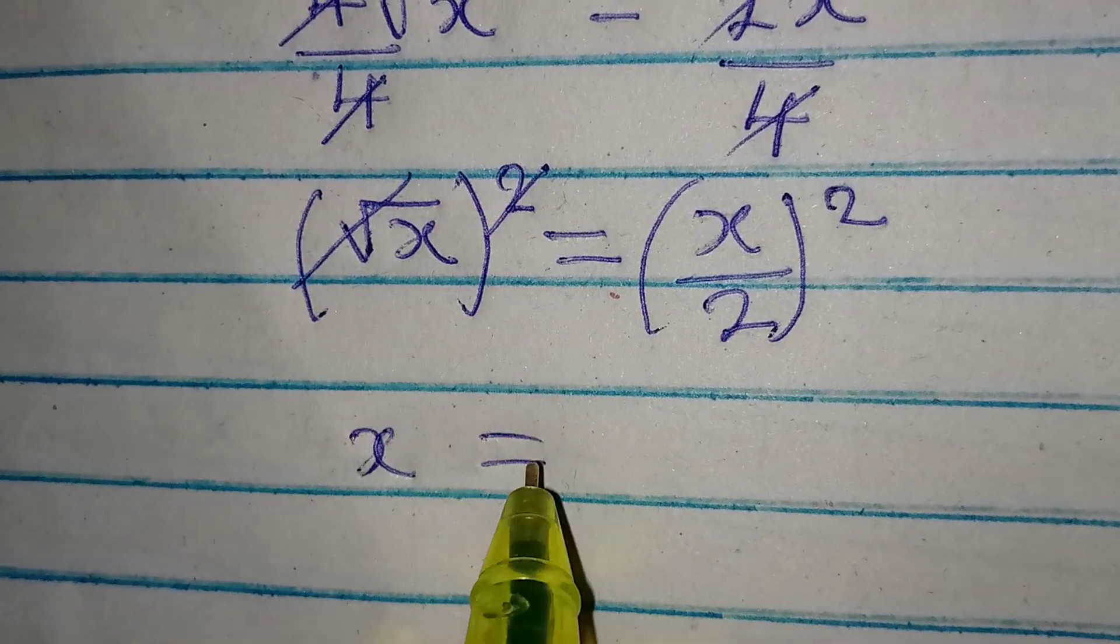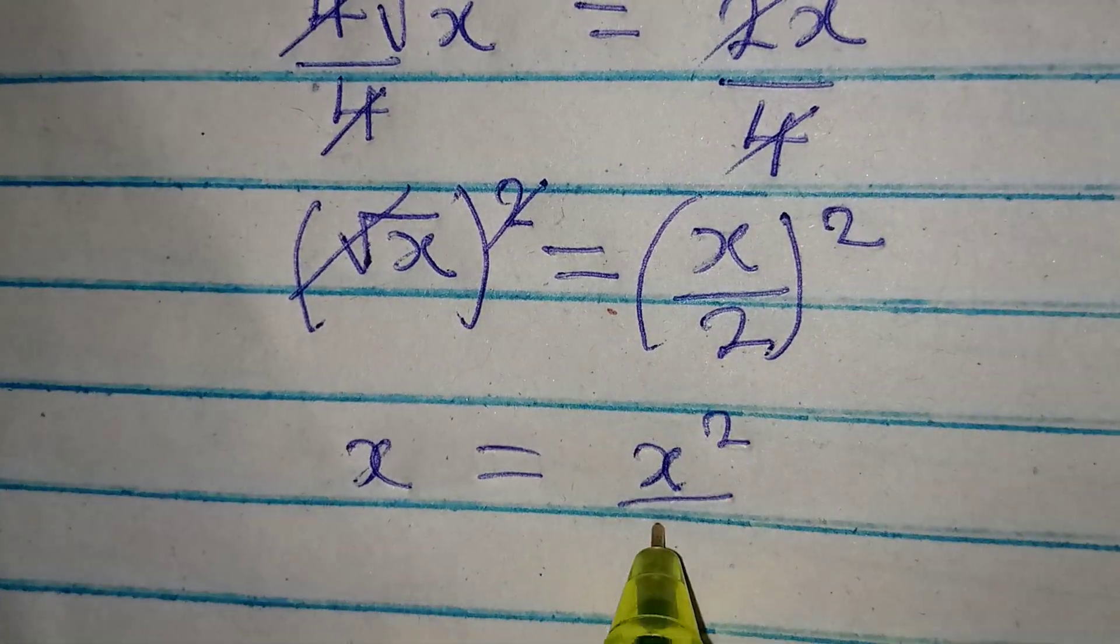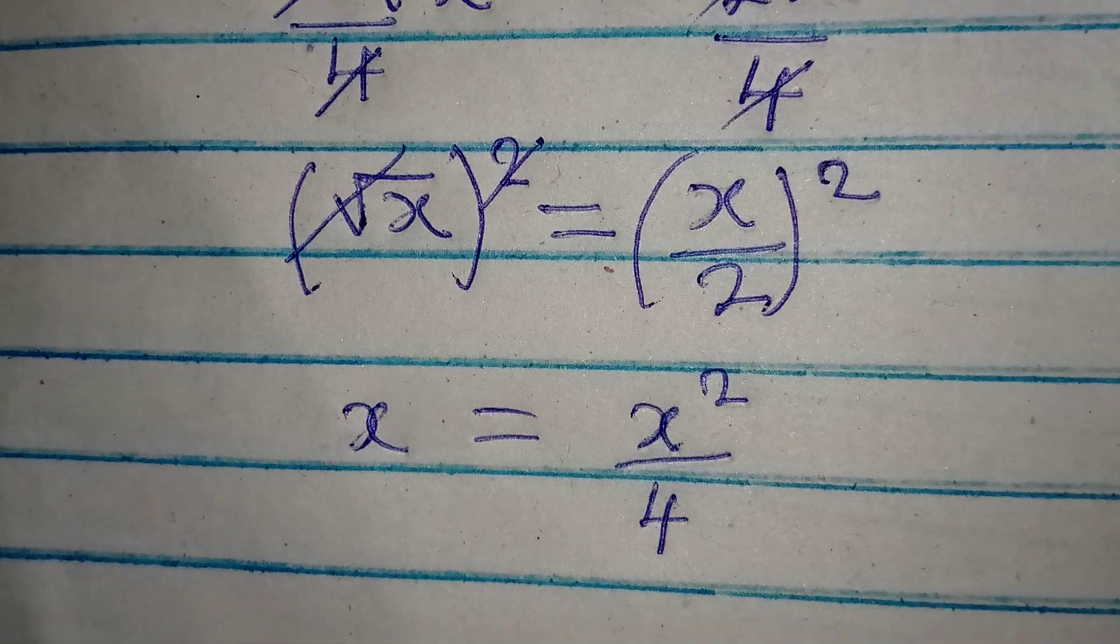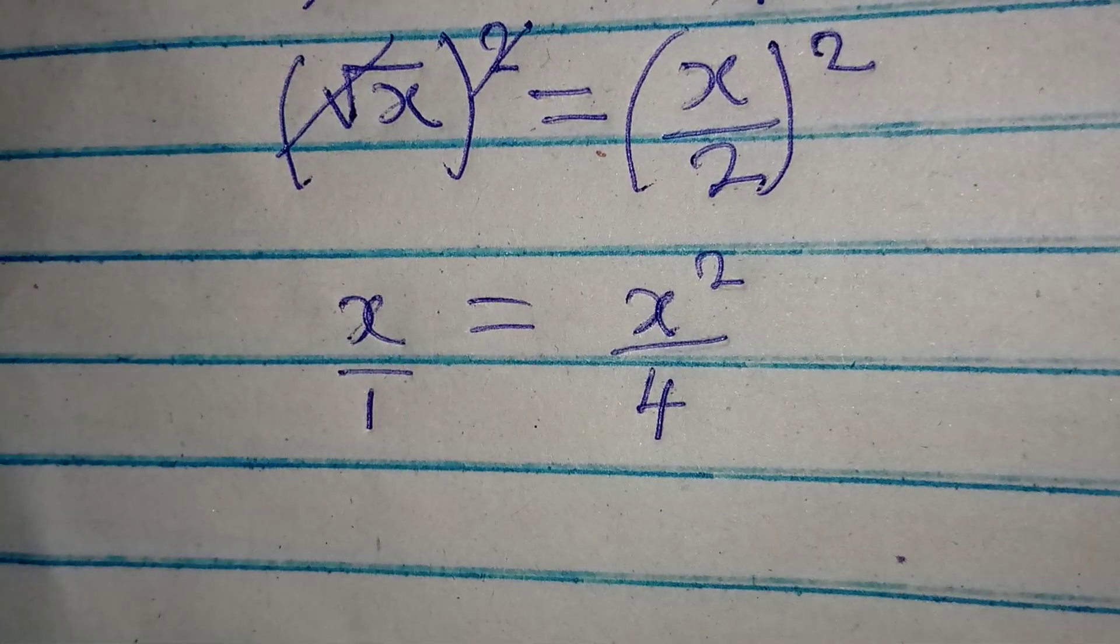Now x is equal to x squared over 2 squared, and that will give 4. Then we cross multiply again because this is still over 1.